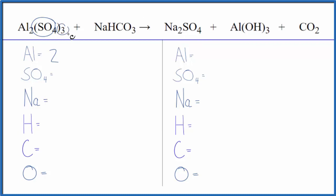So I have one sulfate times three. I'm going to say I have three sulfate ions. For the NaHCO3, one sodium, one hydrogen, one carbon, and then I count these oxygens here because they're not part of the sulfate. I have three oxygen atoms.